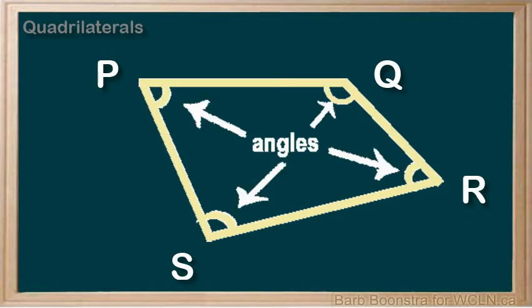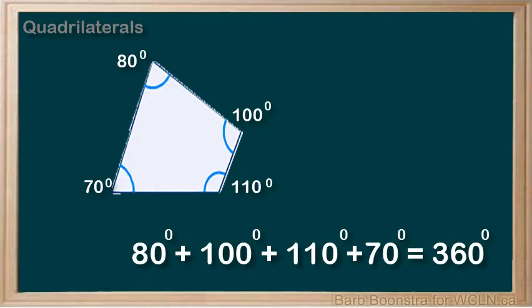It also has four interior angles: angle P, angle Q, angle R, and angle S. The angles of a quadrilateral add to 360 degrees.